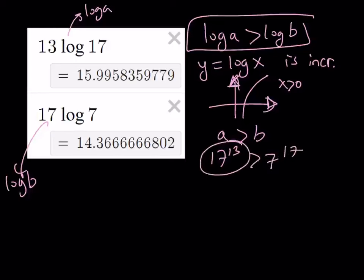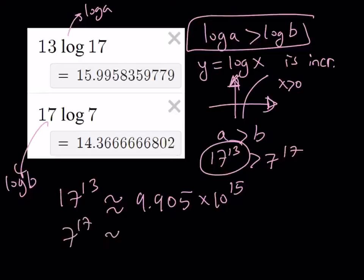Let's take a look at the numerical values for these two numbers. 17 to the power 13 is approximately 9.905 times 10 to the power 15, and 7 to the power 17 is approximately 2.326 times 10 to the power 14. Therefore 17 to the power 13 is larger.